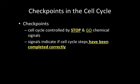These checkpoints are controlled by stop-and-go chemical signals that indicate whether the cell cycle steps have been completed correctly. If completed correctly, chemicals tell the cell to continue through the cell cycle; if not, it signals a stop. At that point, the cell may halt completely or undergo apoptosis — a process where the cell programs itself to die in order to prevent genetic disorders and other cellular problems from occurring.